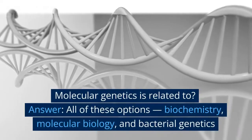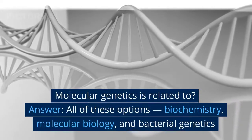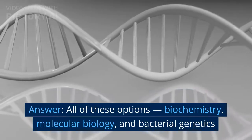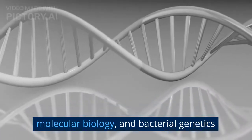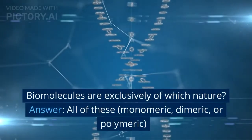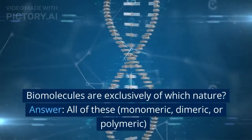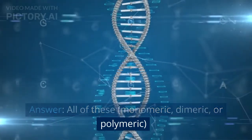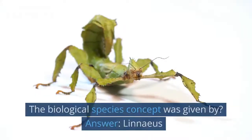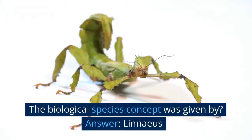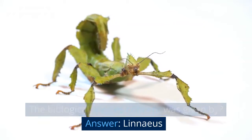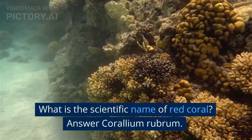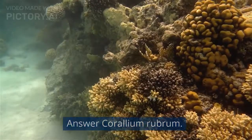Molecular genetics is related to? Answer: all of these options — biochemistry, molecular biology, and bacterial genetics. Biomolecules are exclusively of which nature? Answer: all of these — monomeric, dimeric, or polymeric. The biological species concept was given by? Answer: Linnaeus. What is the scientific name of red coral? Answer: Corallium rubrum.